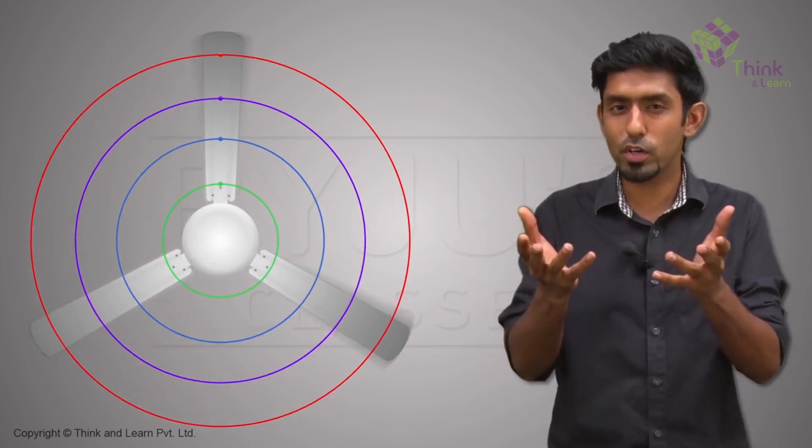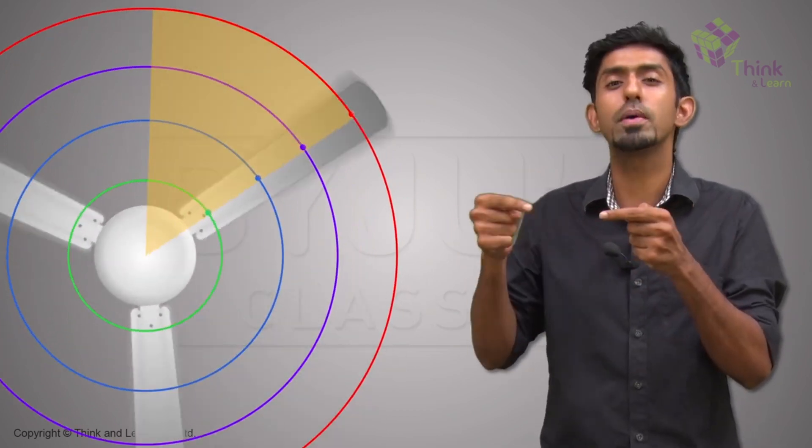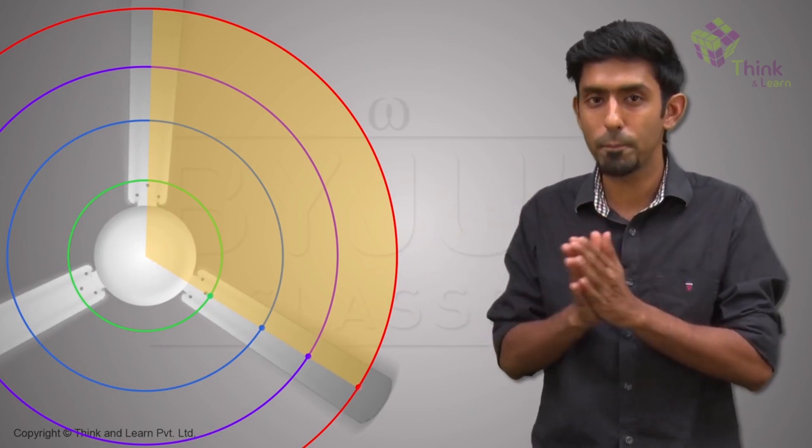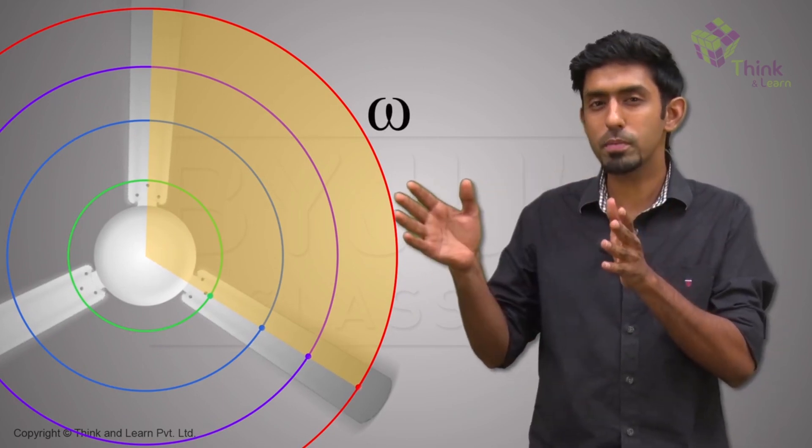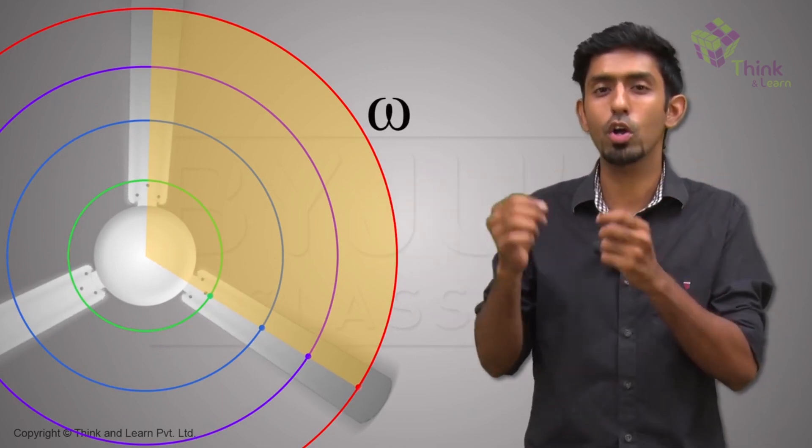We have a way of saying this. We say that all of them have the same angular velocity, omega. All of them have the common or constant omega.